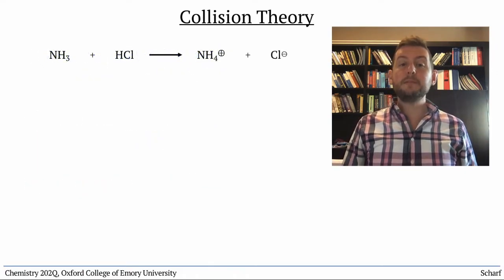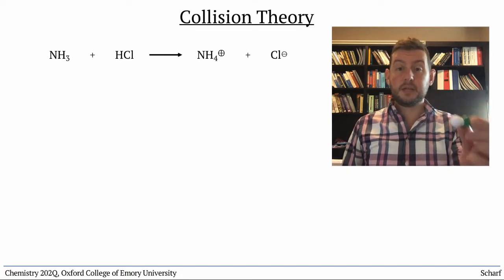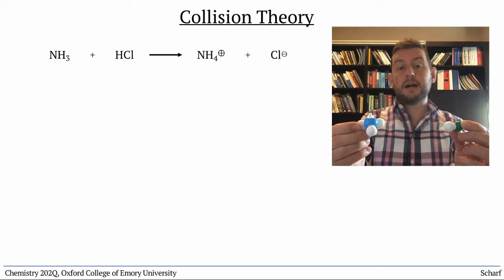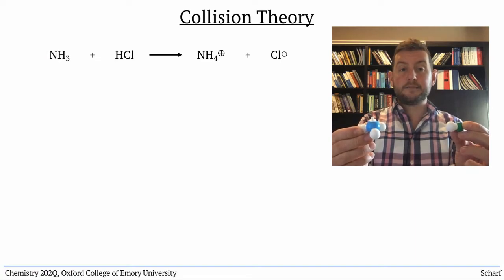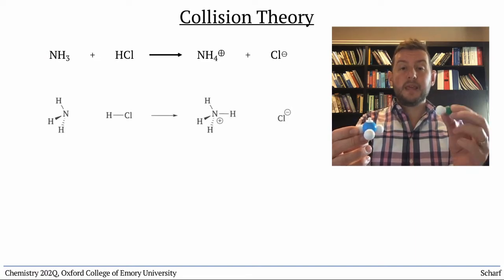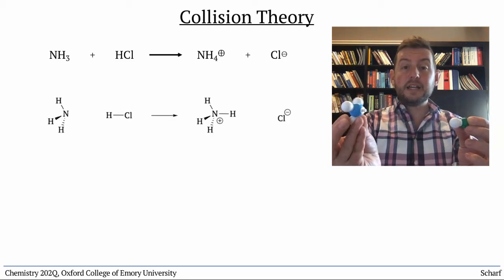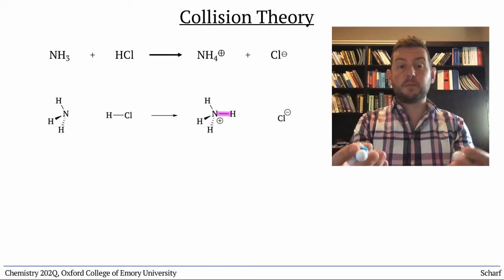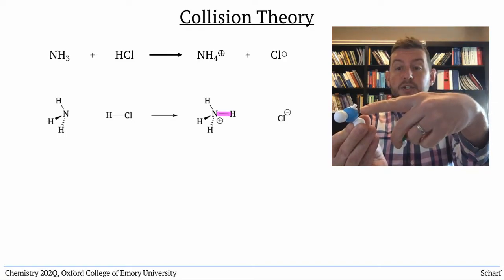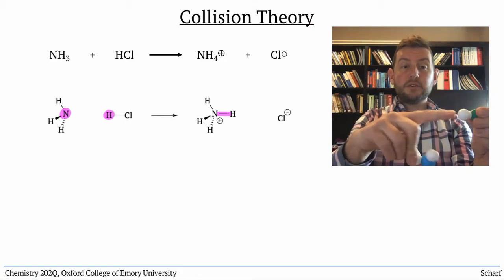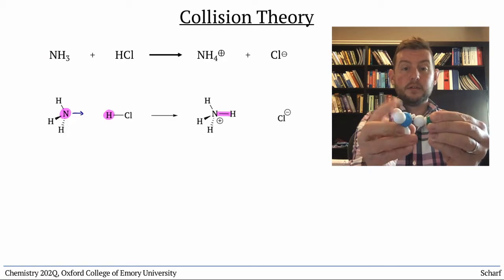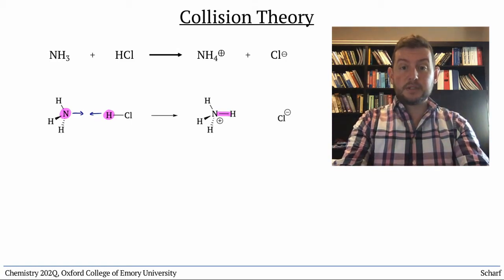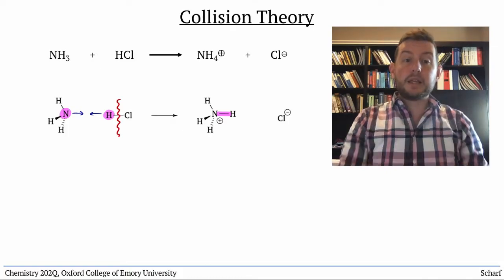Let's see how this works with a simple acid-base reaction between hydrochloric acid, HCl, and ammonia, NH3, which produces the ammonium ion, NH4+, and the chloride ion, Cl-. In order for the reaction to happen, an HCl molecule must literally collide with an NH3 molecule so that a new NH bond is formed. This means that the nitrogen of ammonia needs to bump the hydrogen of HCl and not the other way around. And the two molecules need to collide with sufficient energy to break the bond between hydrogen and chlorine.